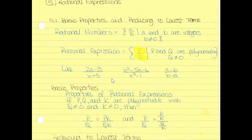Here are some examples: 2x minus 3 all over x plus 5; x squared minus 5x plus 6 all over x squared minus 1; and a minus b all over b minus a. These are all examples of what a rational expression can look like.